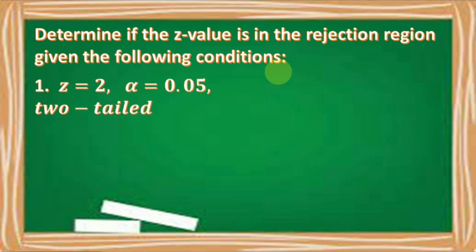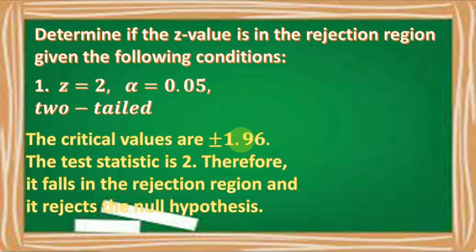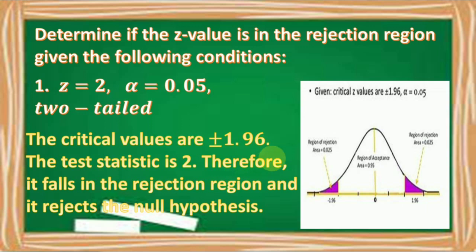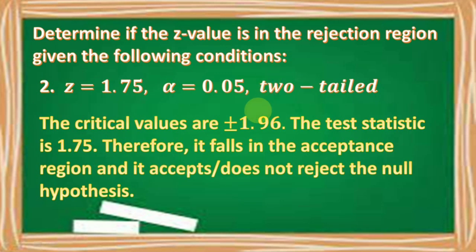Let us determine if the Z value is in the rejection region or not. Number one: Z = 2, α = 0.05, two-tailed. Critical values are ±1.96. Since 2 > 1.96, it falls in the rejection region — reject the null hypothesis. Wait — the test statistic is 2, which is greater than 1.96, so it actually falls in the rejection region. Number two: Z = 1.75, α = 0.05, two-tailed. Critical values are ±1.96. Since 1.75 < 1.96, it falls in the acceptance region — do not reject the null hypothesis.